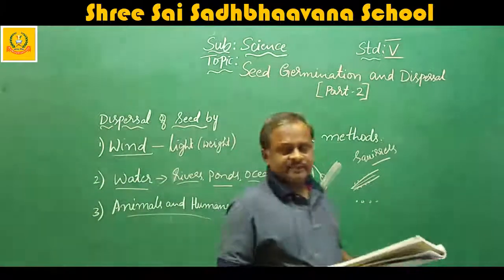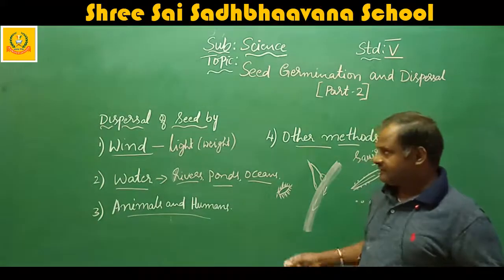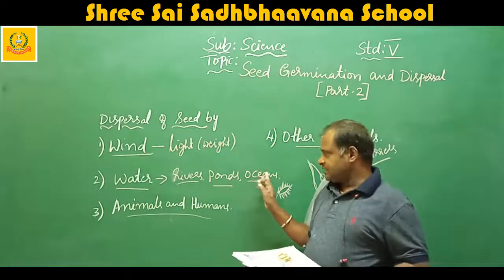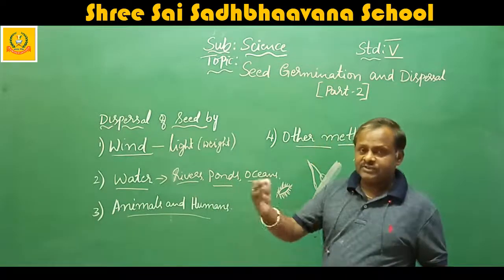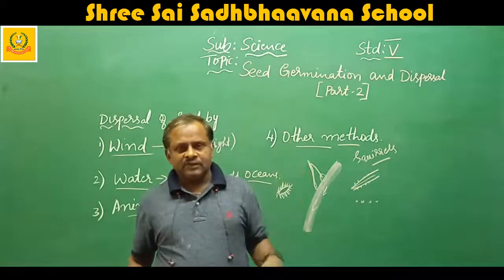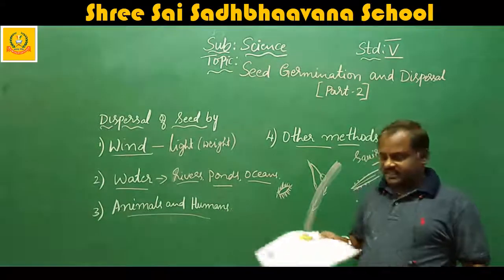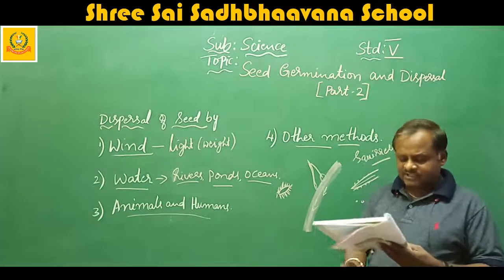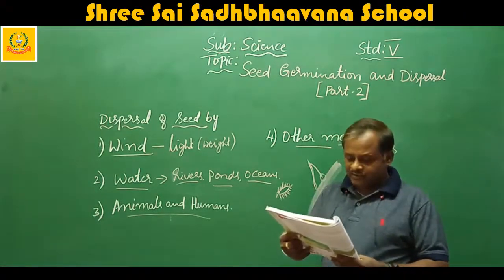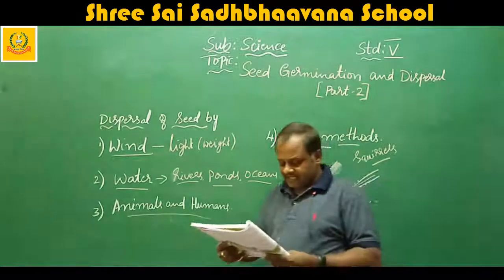Other methods of seed dispersal. We've studied dispersal by wind for lightweight seeds, by water for floating seeds, and by animals and humans. Now, other methods: some plants have pods which explode and burst open when they are ripe, scattering seeds in all directions. Examples are balsam, pea, ladyfinger, and tamarind.